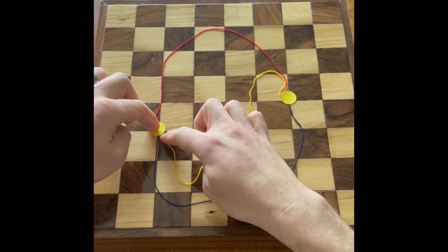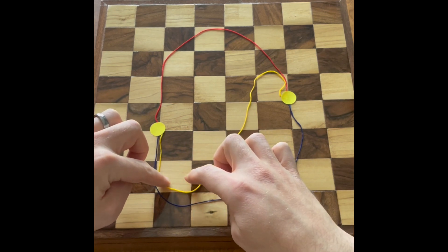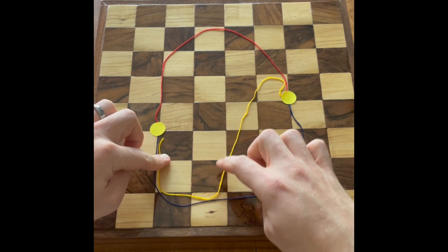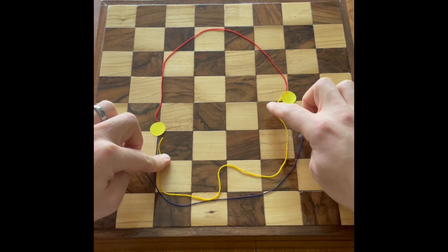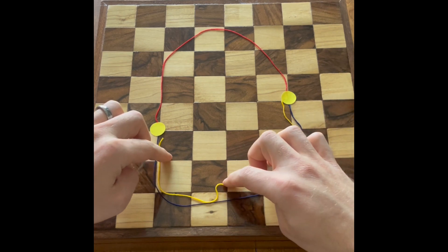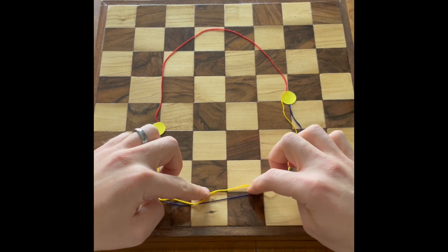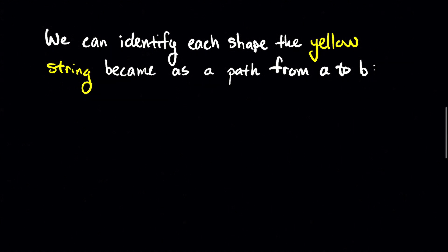Then we use the yellow string to visualize a way to continuously deform the red string gamma naught into the blue string gamma 1. By continuously deform I mean we can't lift it or detach it.